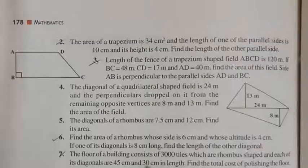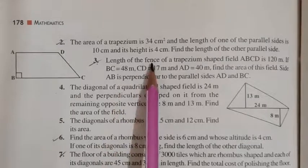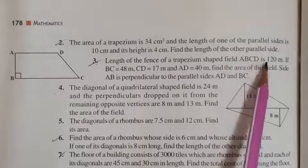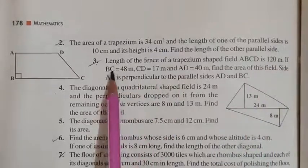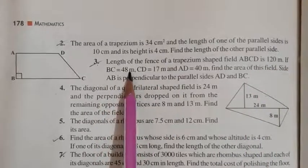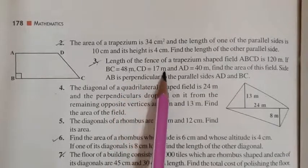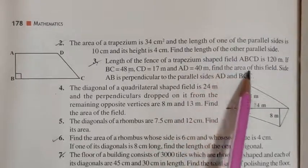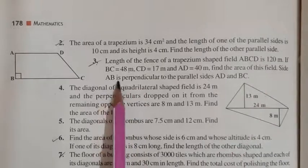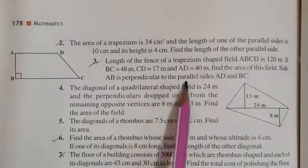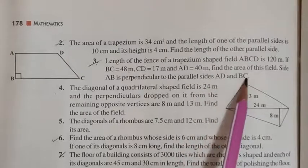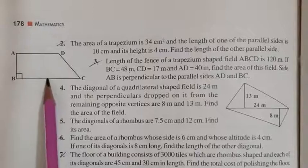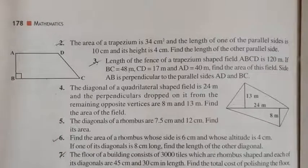In question number 3 it says: the length of the fence of a trapezium shaped field ABCD is 120 meters. BC is equal to 48 m, CD is equal to 17 m, AD is equal to 40 m. Find the area of this field. Side AB is perpendicular to the parallel sides AD and BC. Now this is the figure given to us — let us solve question number 3.